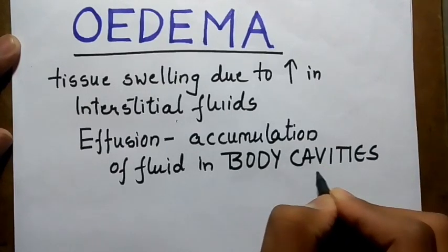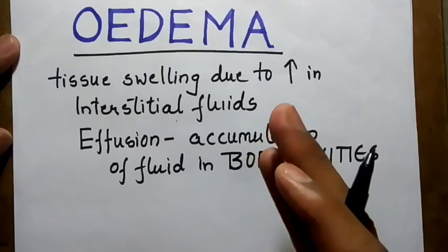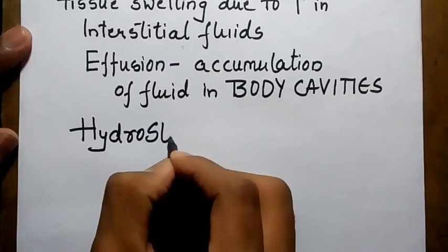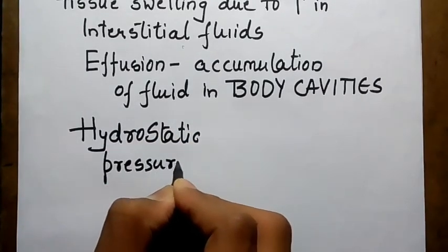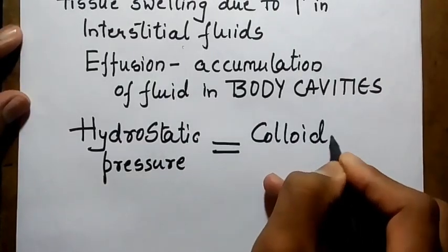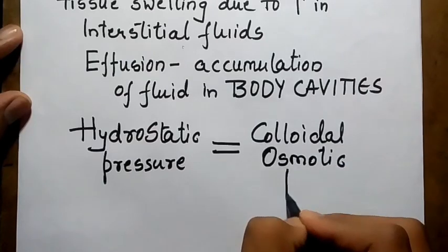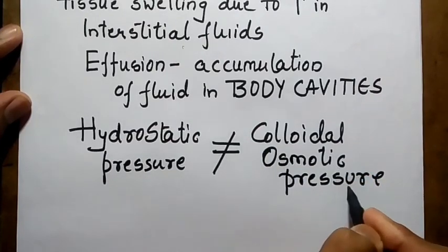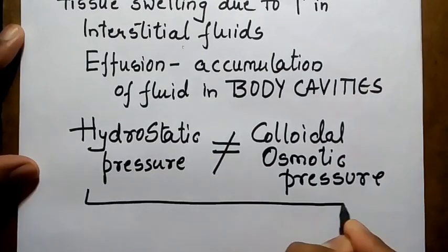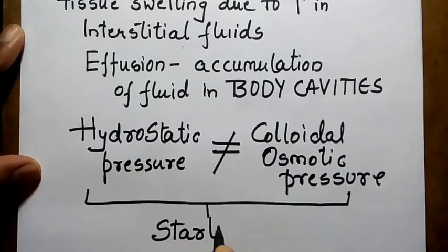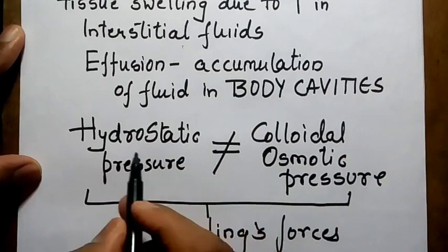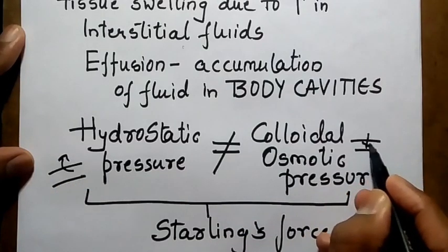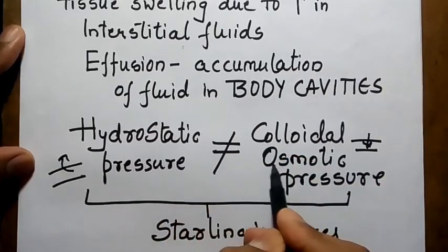Edema occurs due to an imbalance in hydrostatic pressure and colloidal osmotic pressure within the blood vessels. Both of these are called Starling's forces. Hydrostatic pressure pushes water out of blood vessels, while colloidal osmotic pressure draws water into blood vessels. When there is an imbalance between these two, it causes edema.